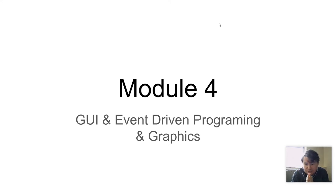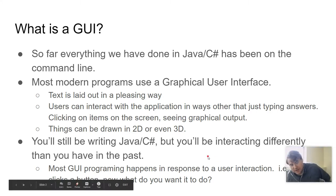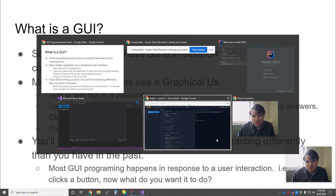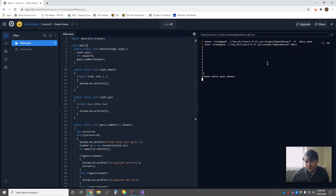Those are all my logistical updates, so without further ado, let's get started on module number four. The first question you might have is: what is a GUI and why are we talking about it? GUI stands for graphical user interface, which is probably something you've heard of before, and it is a replacement — or a different way — of doing interaction with users.